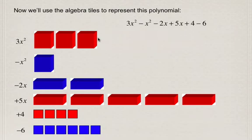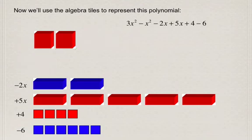Now we're going to use the zero principle. If you have an x squared and a negative x squared, they cancel each other out. What we're left with then is 2 positive x squareds, meaning 3x squared minus x squared equals 2x squared.